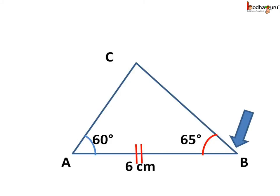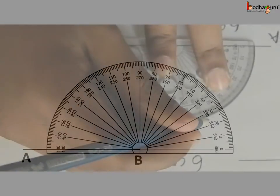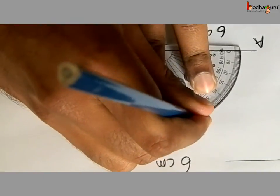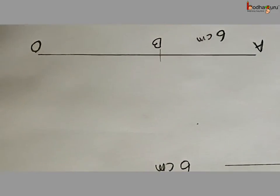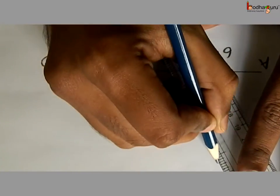Now look at the rough sketch: angle A is 60 degrees and angle B is 65 degrees. First, let us draw 65 degrees at B. Put the protractor on AB such that AB coincides with the baseline of the protractor, and point B is at the middle mark of that baseline. We make a point at 65 degrees and draw the 65-degree ray at point B. So angle B is 65 degrees.